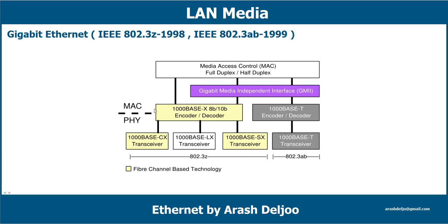Now let me introduce Gigabit Ethernet — IEEE 802.3z or IEEE 802.3ab. Gigabit Ethernet (GbE or 1 Gig) transmits Ethernet frames at a rate of 1 gigabit per second. It is a transmission technology based on the Ethernet frame format used in LANs, providing a data rate of 1 billion bits per second. It is defined in the IEEE 802.3 standard and currently used as the backbone in many enterprise networks. The initial standard, IEEE 802.3z, was produced in June 1998 and required optical fiber.